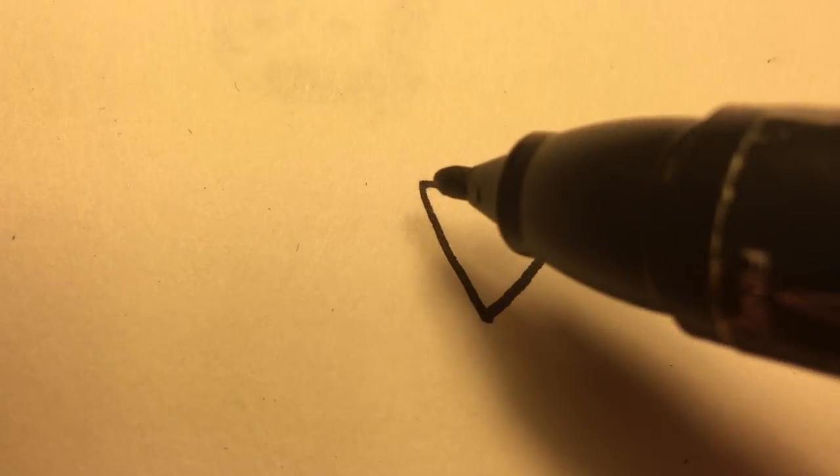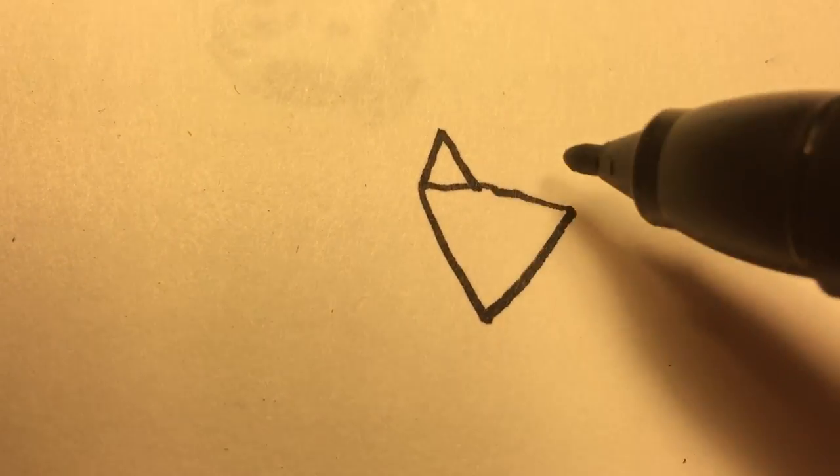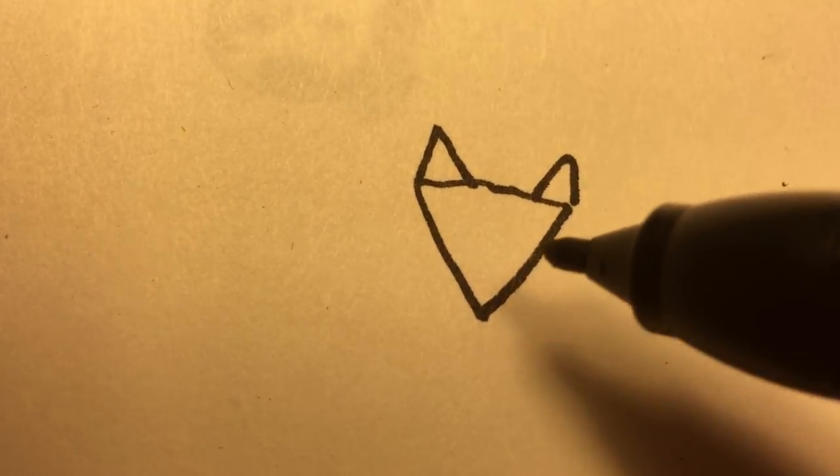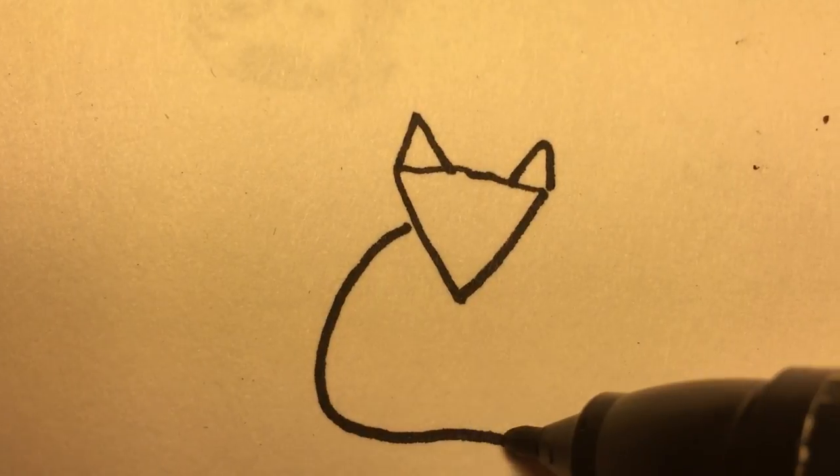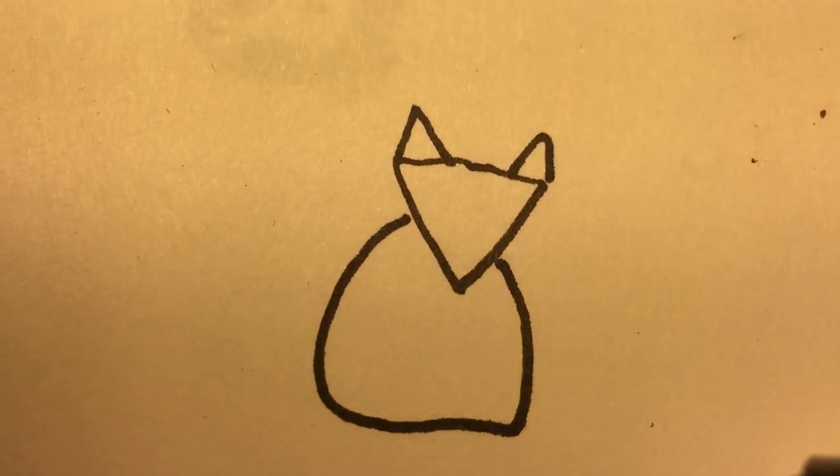So the first thing to do is draw a triangle like this and two pointy ears. Then we'll draw a body. It almost looks like a blob.